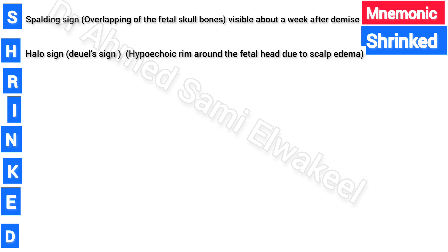H is the Halo Sign, also known as the Dual Sign, which refers to a hypoechoic rim around the fetal head due to scalp edema. This is another strong indicator for IUFD.